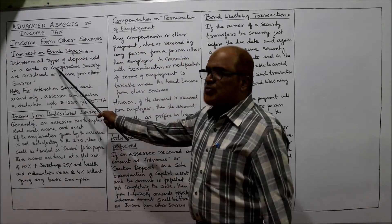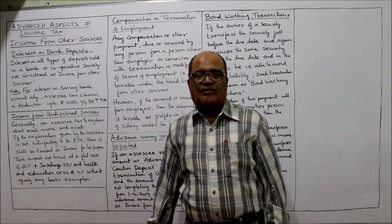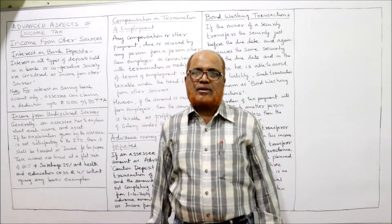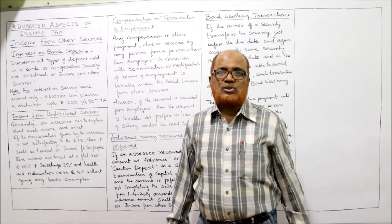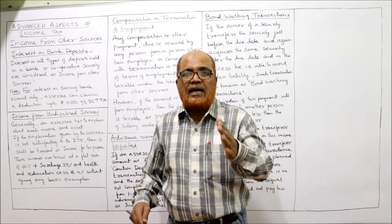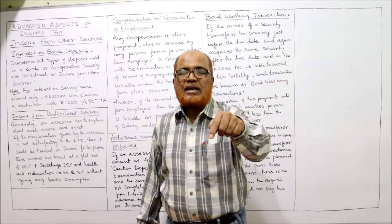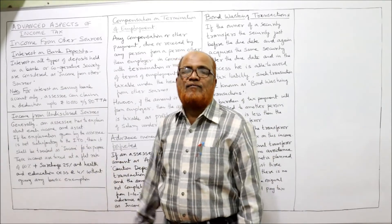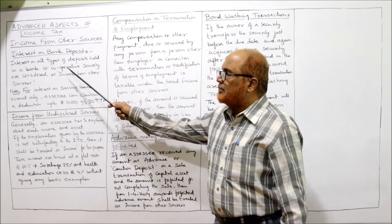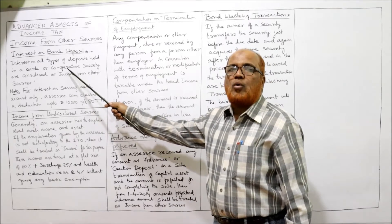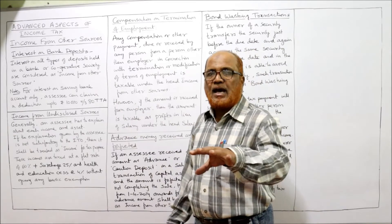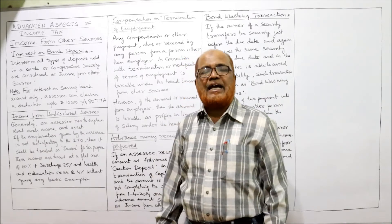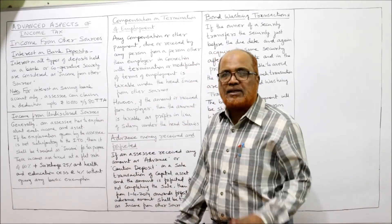The first point is interest on bank deposit. Many people deposit money in the bank in different types of deposits, and the bank gives interest on those deposits. The Income Tax Act says interest received on bank deposit is taxable under income from other sources — whether it is a bank deposit or any deposit made under a cooperative society. If a person has deposited money in a cooperative society and is getting interest from it, that interest is also taxable under income from other sources.